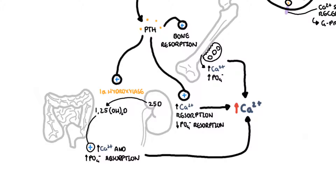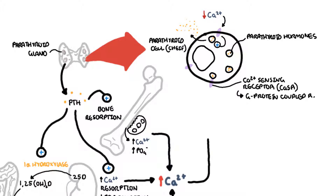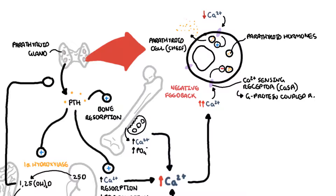In summary, parathyroid hormone will increase serum calcium levels. The rise in serum calcium levels will be detected by the calcium sensing receptor, the CASR, and the CASR will put a brake on the parathyroid cells to stop releasing parathyroid hormone. It's a fine balance — the chief cells use calcium sensing receptors to sense blood calcium levels and respond appropriately. Active vitamin D also has a negative feedback on the parathyroid gland, telling it to ease up production of parathyroid hormone because it's no longer required.